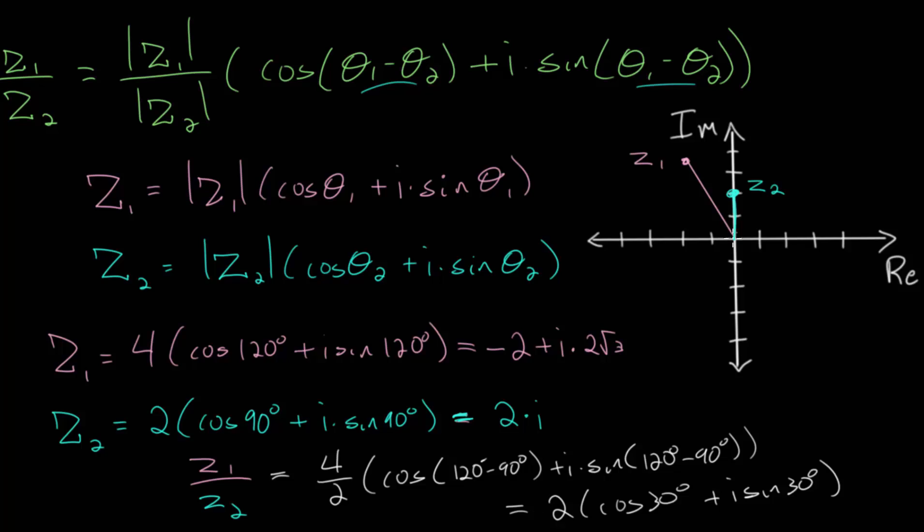We can plot that. It has an angle of 30 degrees and a magnitude of 2. This green color here has a magnitude of 2, and it's at an angle of 30 degrees. So this quotient, we can write this as z3, where z3 is really just z1 over z2. It has a magnitude of 2 and an angle of 30 degrees.